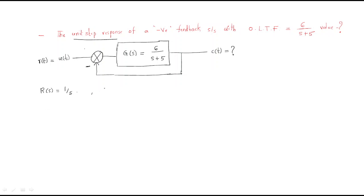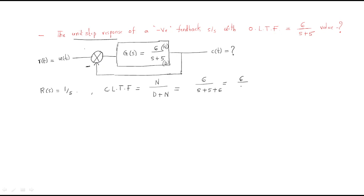We have the open loop transfer function but we require the closed loop transfer function. The closed loop transfer function equals numerator divided by denominator plus numerator. The numerator is 6 and the denominator is s+5, so the closed loop transfer function is 6/(s+11).